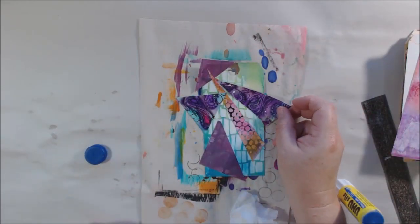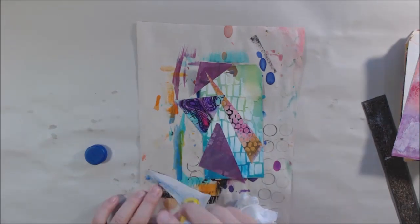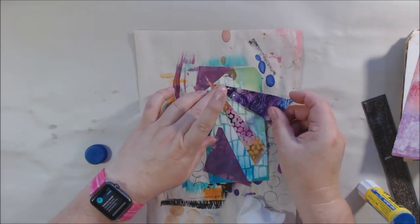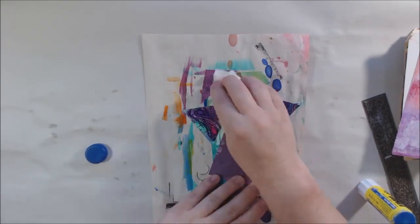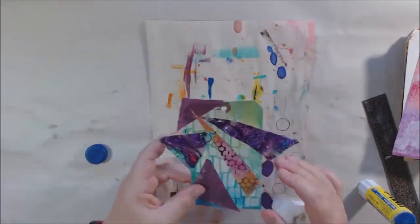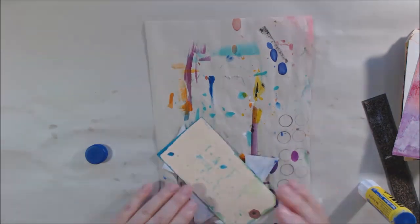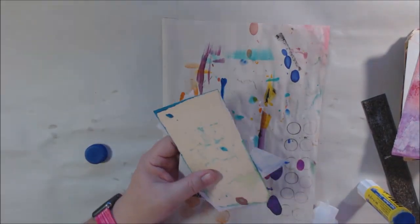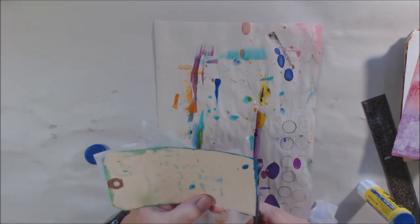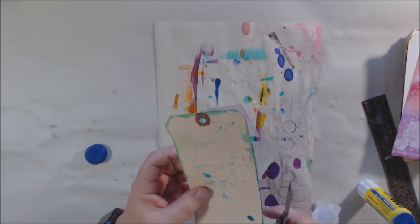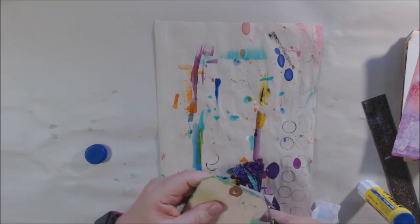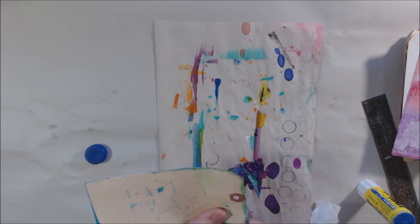Yellow green's complementary color is red violet. Do I want to go with that or the split complementary yellow green, red and violet? Maybe the triad which is yellow green, red orange and blue violet? Or maybe the tetrad? I couldn't decide so I just went with complementary.